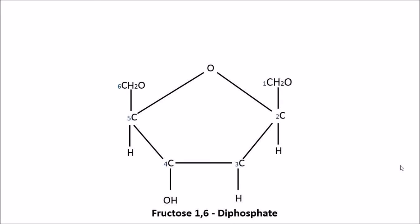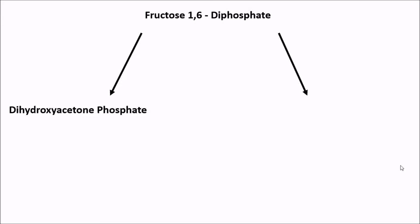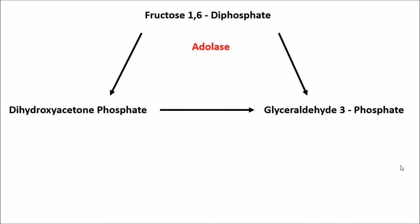Fructose-1,6-bisphosphate has phosphate groups on carbon 1 and carbon 6. It is split by aldolase into two separate molecules: dihydroxyacetone phosphate and glyceraldehyde-3-phosphate. Dihydroxyacetone phosphate is then converted into glyceraldehyde-3-phosphate via isomerase, giving us two glyceraldehyde-3-phosphate molecules proceeding through glycolysis.